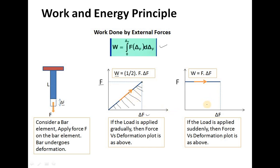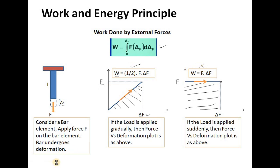The second case is when you apply the load suddenly. In that case, F is constant and you achieve delta F and equilibrium. So the work done W is given as F times delta F, which is the area under that curve. These are the two ways, and we will be concentrating more on the gradual loading case.